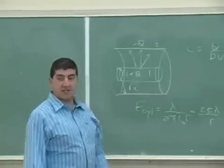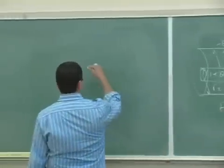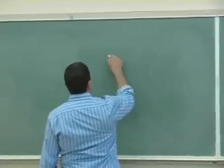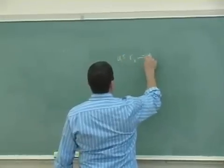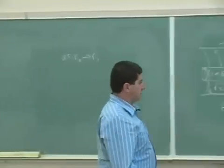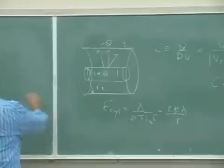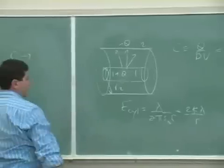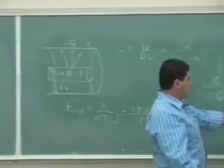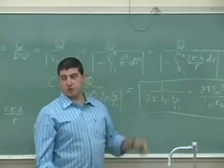Now let's see the behavior of the cylindrical capacitor. As R2 goes to R1, what's the limit of the capacitance? As R2 goes to R1, this ratio approaches 1. Ln of 1 is what?